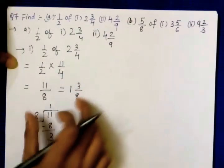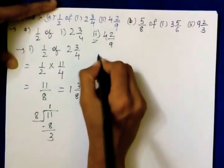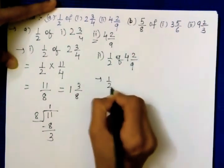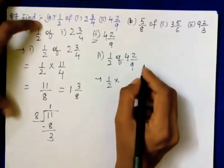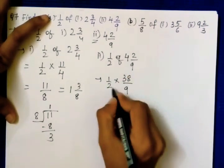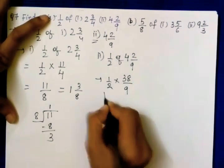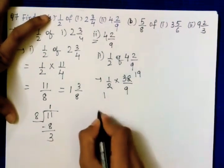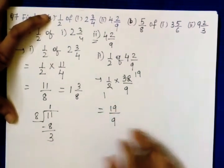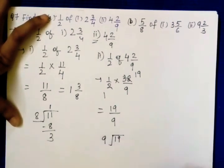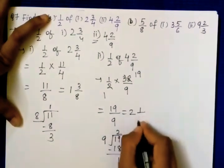Second part of a: half of 4 and 2 by 9. Half into 4 and 2 by 9 — convert: four nines are thirty-six plus two is thirty-eight upon 9. Two and thirty-eight are both even, so cancel: leaves nineteen upon 9. Dividing nineteen by nine, quotient two remainder one — final answer is 2 and 1 upon 9.